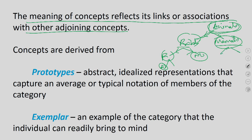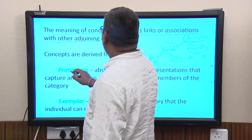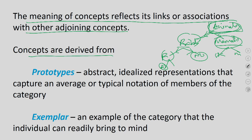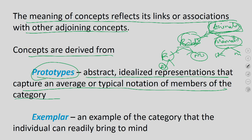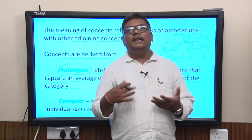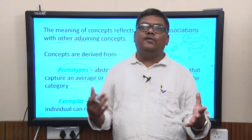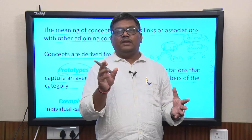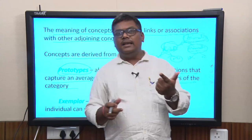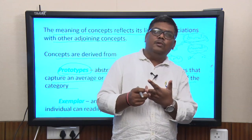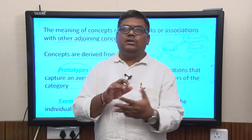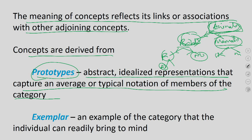Concepts are derived from prototypes — abstract, idealized representations that capture the average or typical member of a category. For example, to derive the prototype of 'animal,' you think of four or five animals, extract the commonality: most animals have four feet, a semi-developed brain, they locomote, and cannot make their own food. Similarly, a car is a vehicle with four wheels, runs on an engine, and is used for transportation.